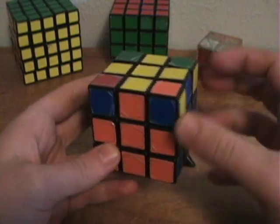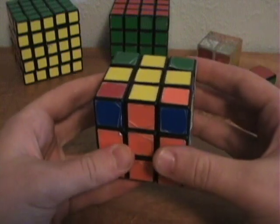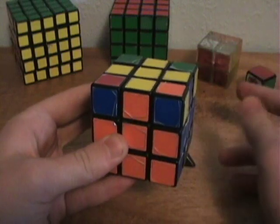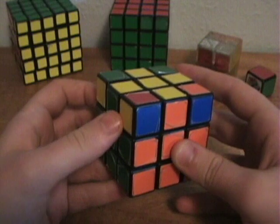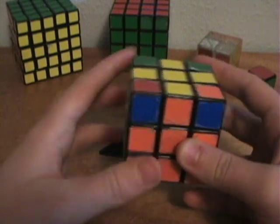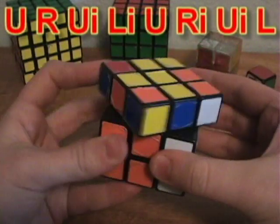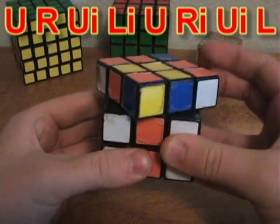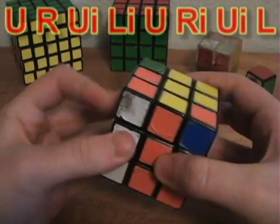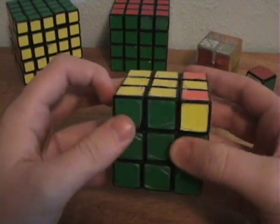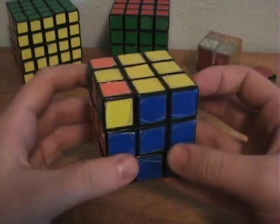So with it facing this way, do the algorithm again once or twice. And each time check to see if the corners are in place. There, it only took once that time.